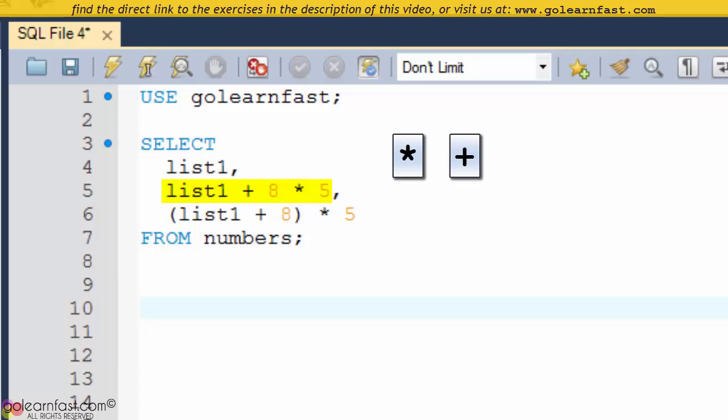When MySQL evaluates the expression in the third column though, it performs the addition operation first because it's enclosed in parentheses.